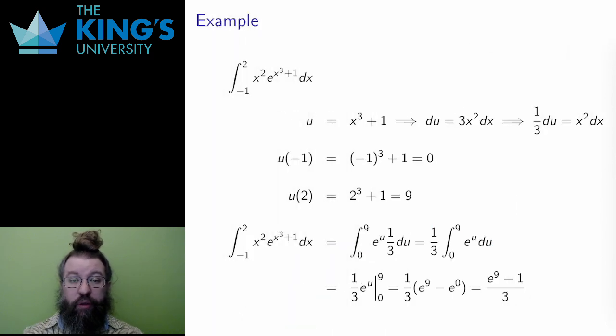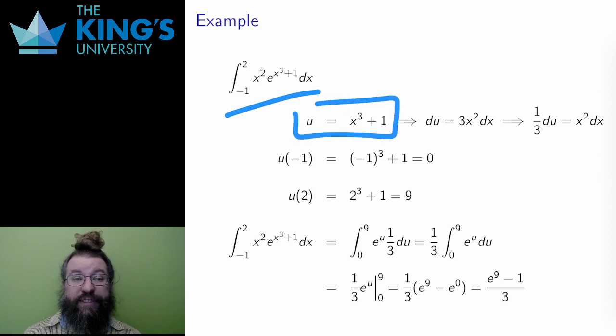Here is another example. I'll try the substitution u equals x cubed plus 1, which is the inside piece of the exponential. The derivative of this is 3x squared, so du is 3x squared dx. I divide this by 3. Since I can't have a 3 in the integral, to get 1 third du equals x squared dx.